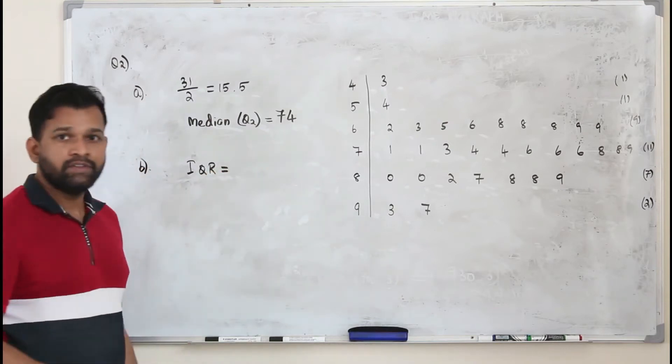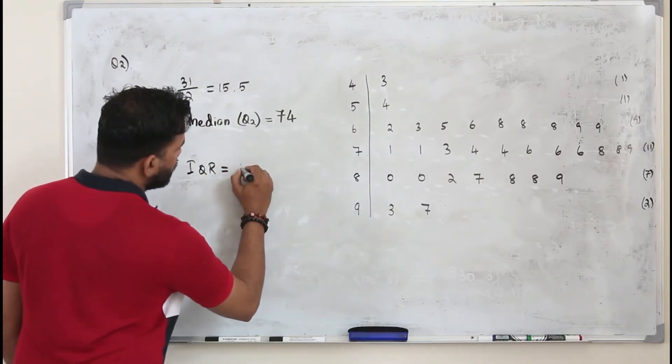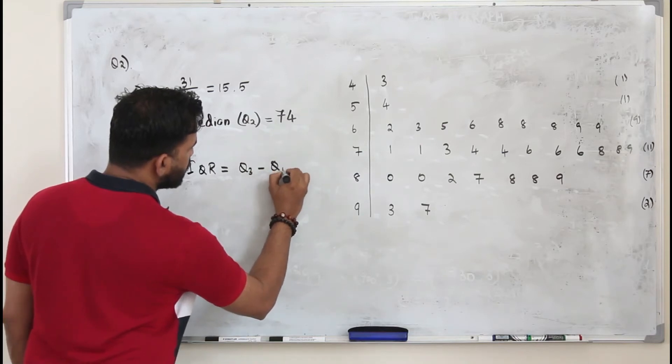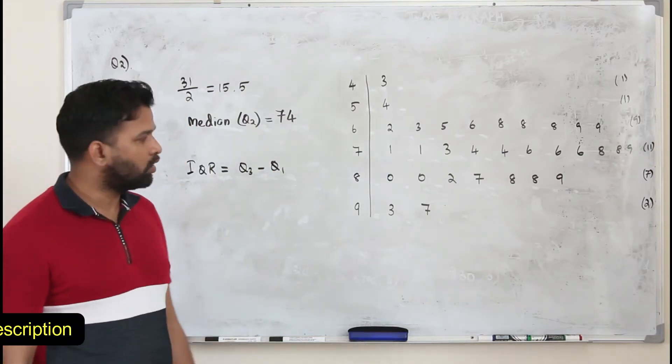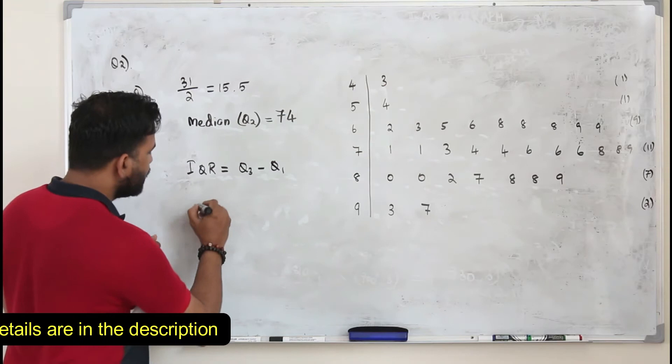Interquartile range is your upper quartile minus lower quartile, Q3 minus Q1. So how do we find Q3?